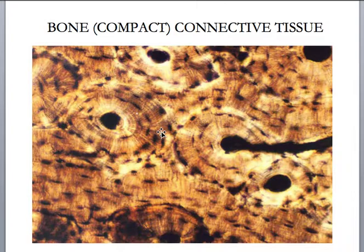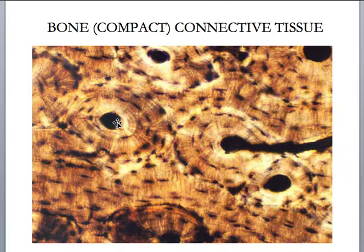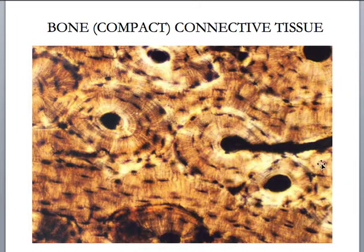The extracellular matrix for compact bone is primarily calcium phosphate — mineral salts — which are very hard, so it's rigid. Compact bone is the hardest or most rigid of all the connective tissues, but it is very highly vascularized. At the center of each one of these units — osteons — you find blood vessels. Surprisingly, bone actually heals faster than cartilage and faster than tendons made up of dense regular connective tissue, because even though it has a very rigid extracellular matrix, there are lots of little canals or channels and it's very highly vascularized.